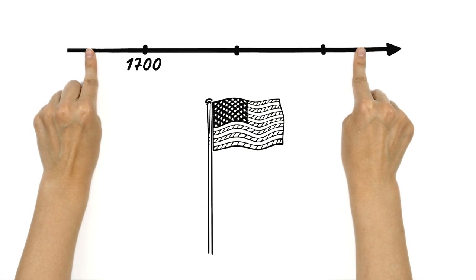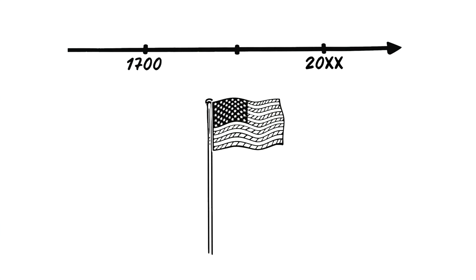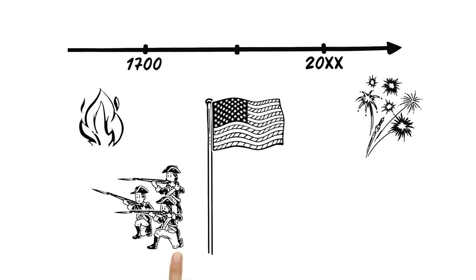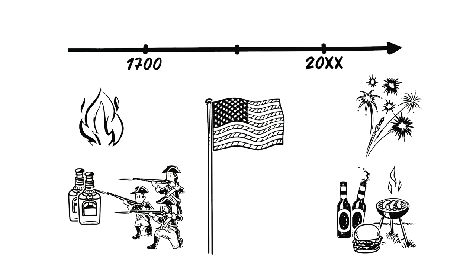Early festivities slightly differ from today's celebrations. The bonfires are today's fireworks. And if soldiers got a double ration of rum, today there's a double ration of burgers and beer for everyone.